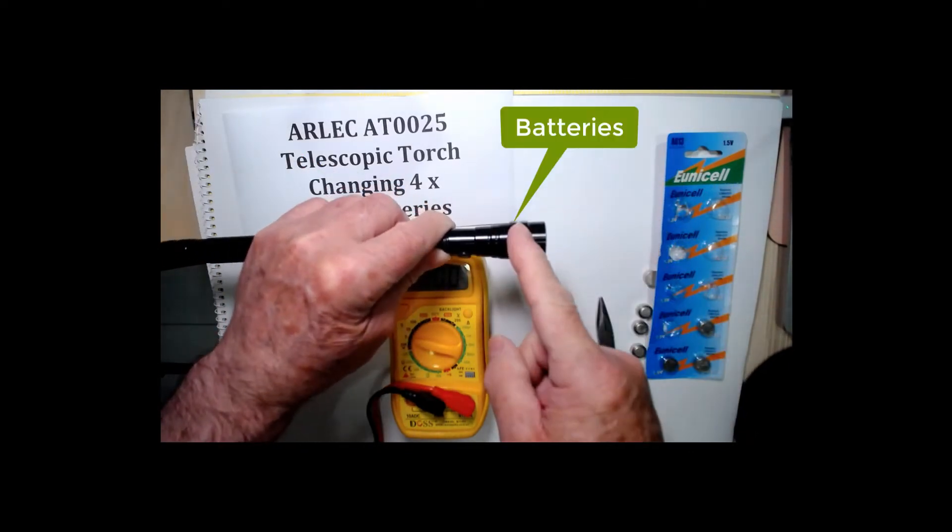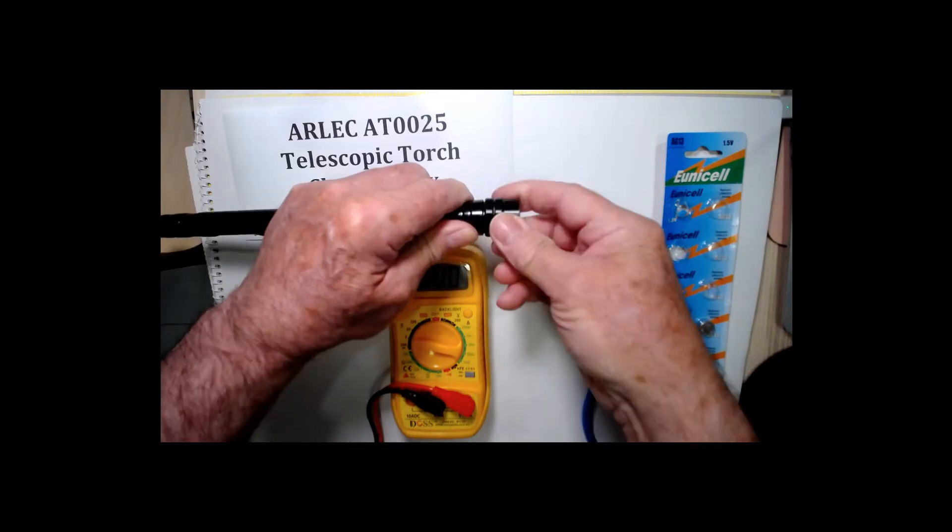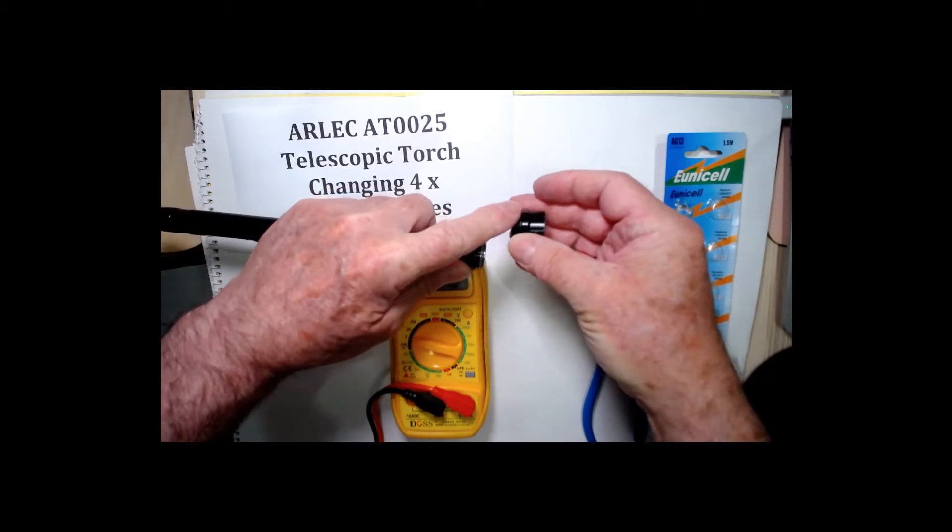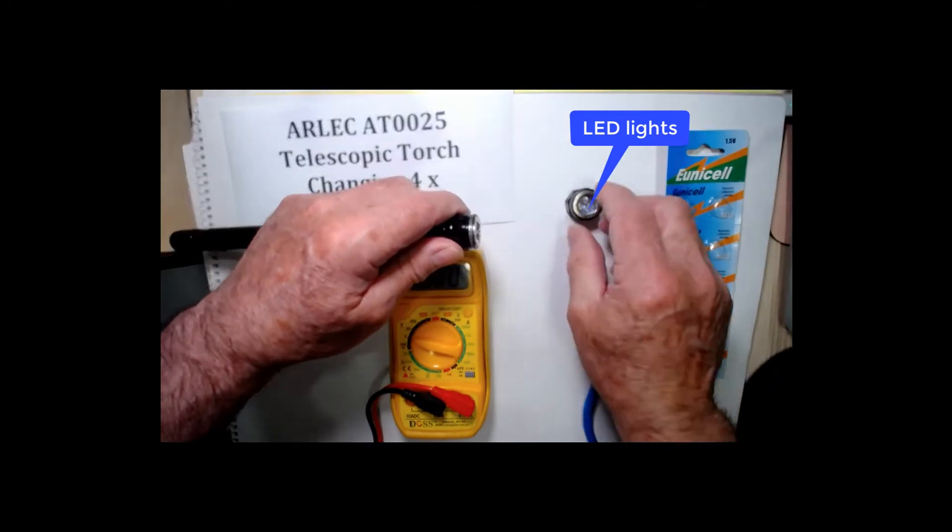The batteries are located in this section here. You remove the top. It looks like there are two separate nuts here but they're molded together and that's got the LED lights in it.